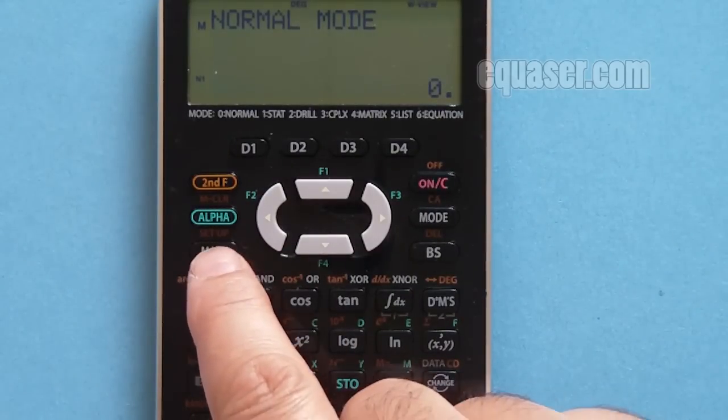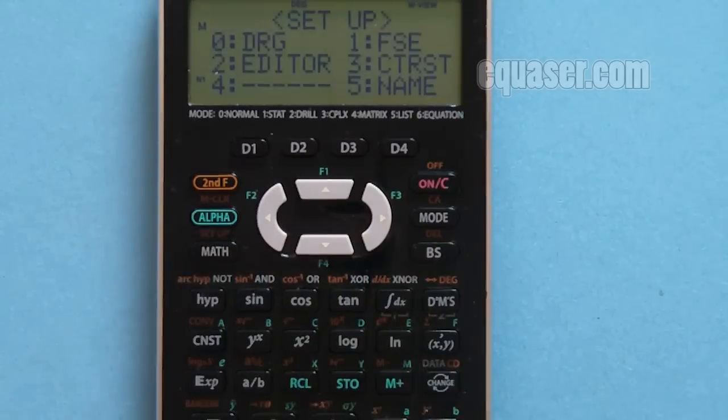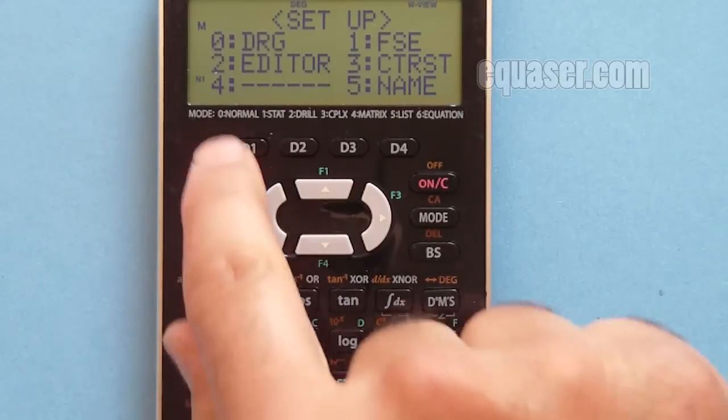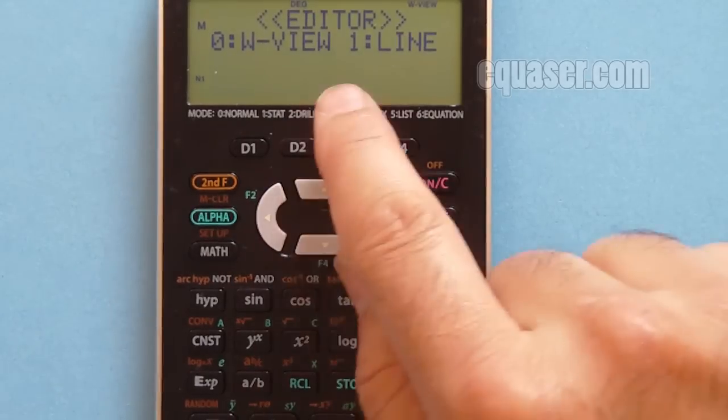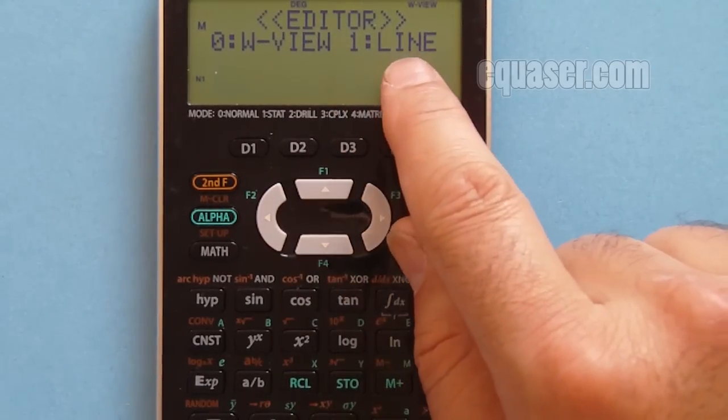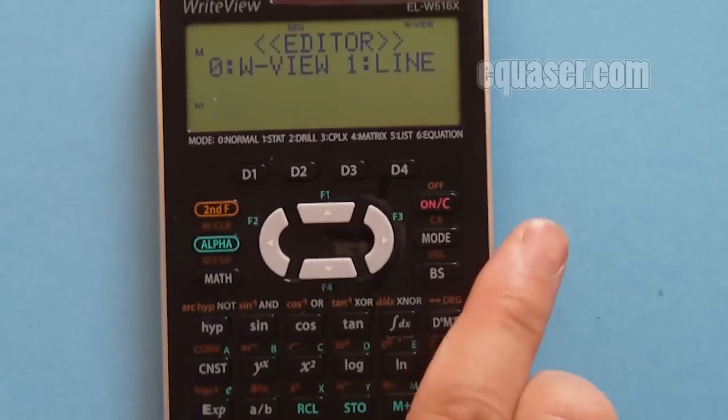The setup button is on the math second function, so I press second function F and then math. We can select two editors. Now we press 1 for line. Usually this calculator is called WriteView.